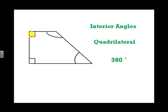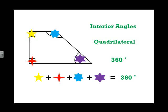Well, let's say I were to replace each of the angles with a different shape. The yellow star, the red star, the blue star, and the purple star. If I added all four of them together, I should get 360 degrees.